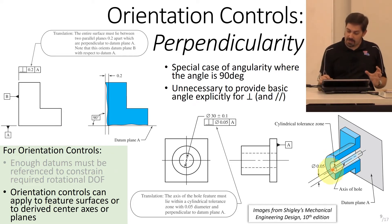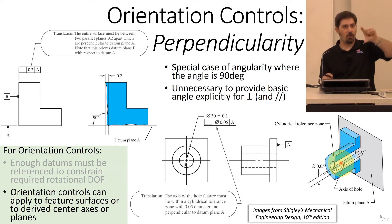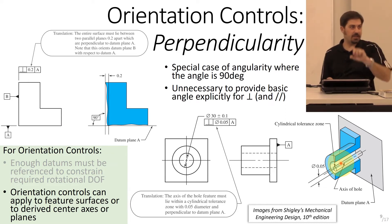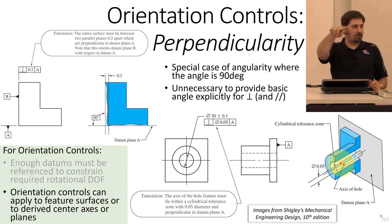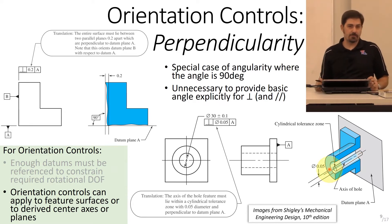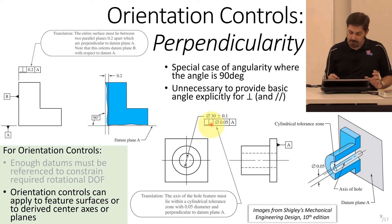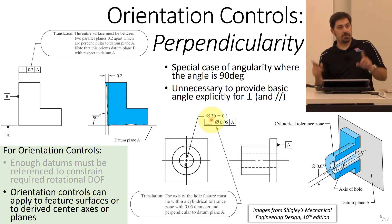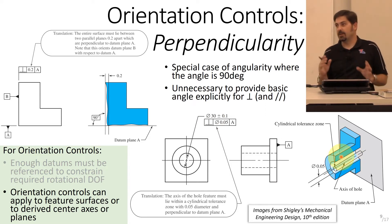Orientation controls can apply to feature surfaces or to derived center axes or planes. Just like the derived median plane, there is a derived center axis of a hole — taking opposing points along the hole and finding the halfway point gives you the median line, which may snake around a bit since the hole may not be perfect. That median line has to lie within the cylindrical tolerance zone for the perpendicularity constraint. This also applies to the angularity control, not just perpendicularity.